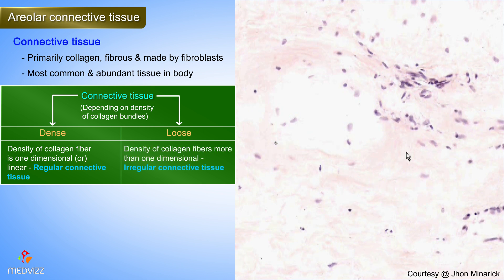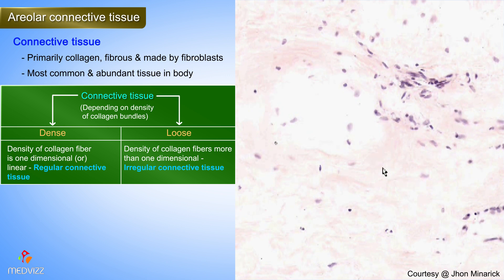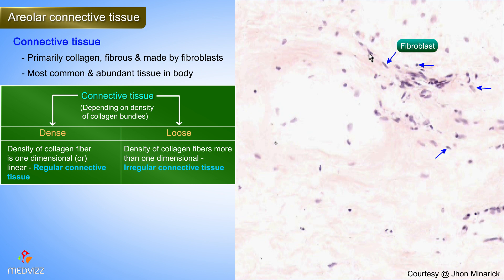When you see collagen fibers which seem to go every which way, that's what we call irregular connective tissue. Dense connective tissue is more likely to be regular or tendinous, and loose connective tissue is more likely to have fibers going every which way. A general rule of thumb is that every spindly-looking cell within connective tissue of any type is a fibroblast until proven otherwise.